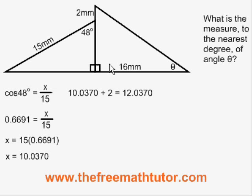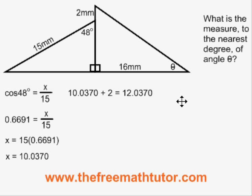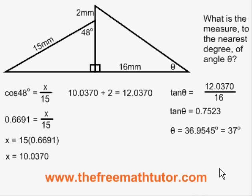We now have enough information to solve. The upright is 12.0370 and the base is 16. It's a right triangle and we are looking for angle theta. From angle theta's point of view, the two sides we know are the opposite and the adjacent — this is a TOA situation. Tan of unknown angle theta is equal to 12.0370 over 16. We simplify and get theta equals 36.9545 degrees, rounded to four decimal places.